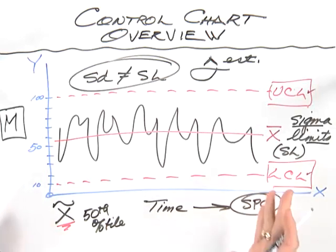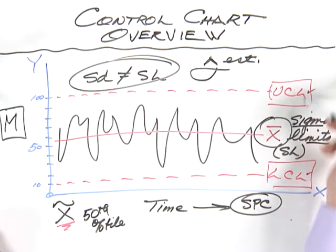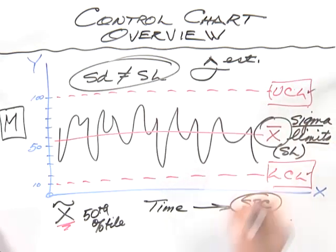So basically, the elements of the control chart look like a run chart, except we're going to again replace the median with the mean. We get the upper and lower control limit that tell us the boundaries of variation in the data. We have data plotted over time, and we have our measure on the vertical.